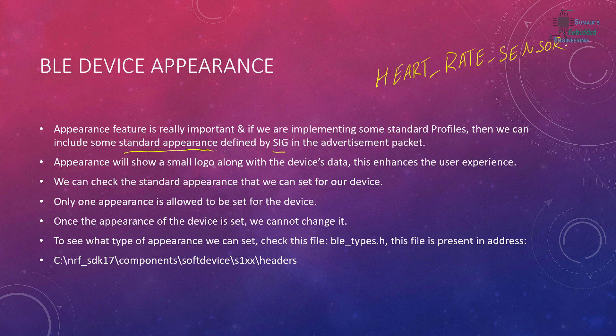You have to make sure we can only include one appearance per device. Appearance will show a small logo along with the device's data, which enhances the user experience. Once the user scans for Bluetooth devices, our device can reflect its appearance — for example, if it's a heart rate sensor, it will show that appearance with a corresponding logo. We will see that shortly when we do the programming.